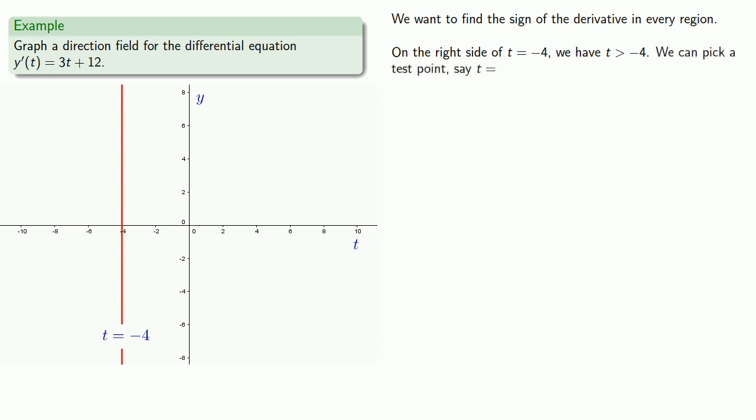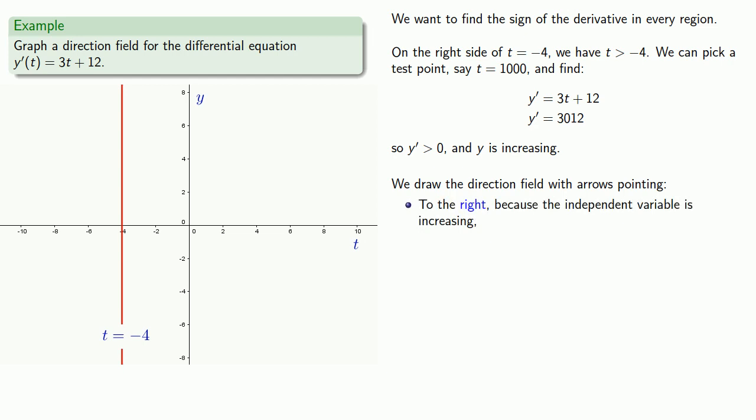To find the sign of the derivative, we can pick a test point, say t equals, oh I don't know, 1,000, and we find our derivative, y prime will be positive, and so y is increasing. So our direction field is going to show us what happens to our function. We want to draw the direction field with arrows that are pointing to the right because the independent variable is increasing, and upward because the dependent variable is also increasing. So in this region, we might draw a representative arrow pointing to the upper right.